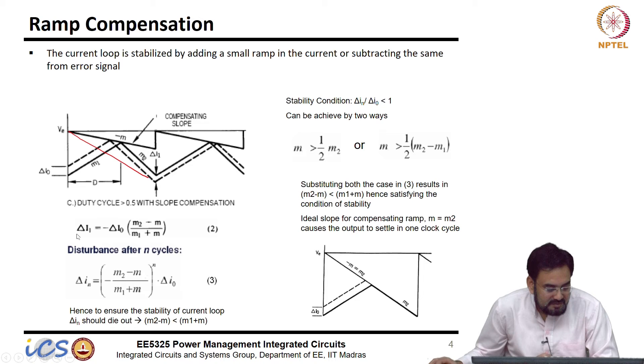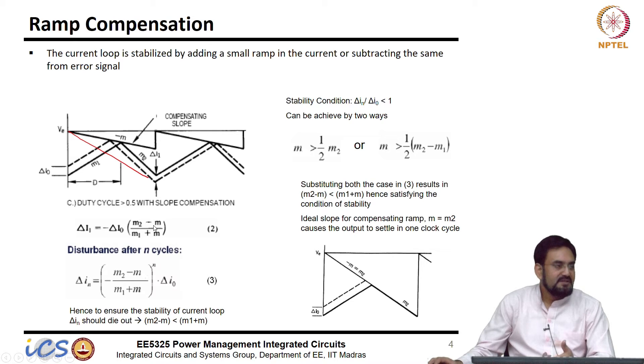So, now, that equation will get modified with this M2 minus M over M1 plus M. So, stronger the M obviously, this will be much lesser compared to your denominator and this will converge much faster, but the problem is there is a trade off. Whether you want to converge much faster or you want it to behave like a voltage mode control, that is why we cannot make this M much stronger.